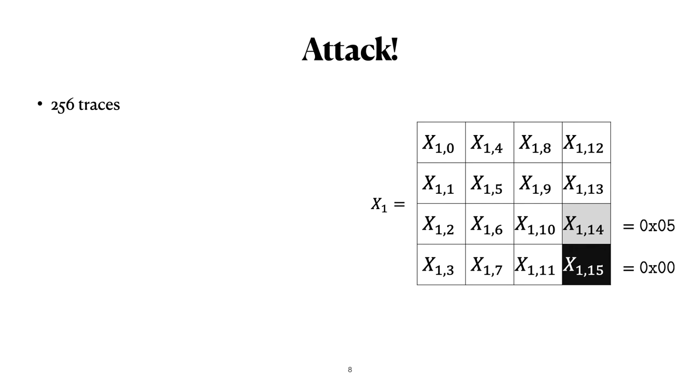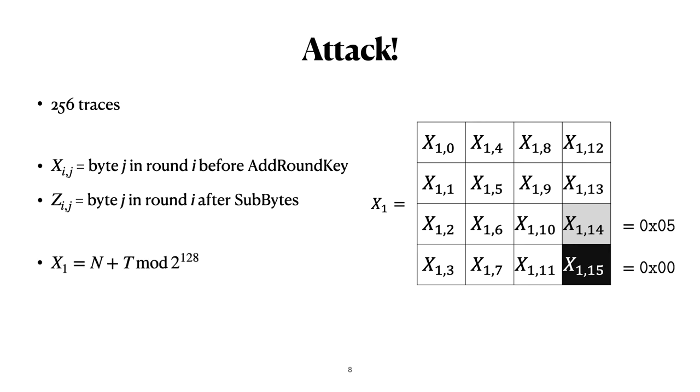Also we will use x to denote the state before add round key and z for after sub-bytes. And what we know about the very first state x1 is that it's the sum of the nonce or iv which we don't know and a counter that starts from zero which we do know.